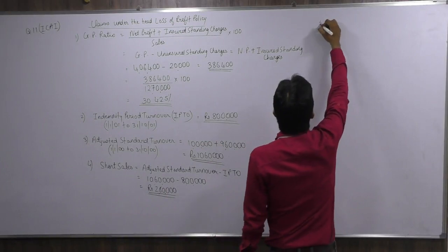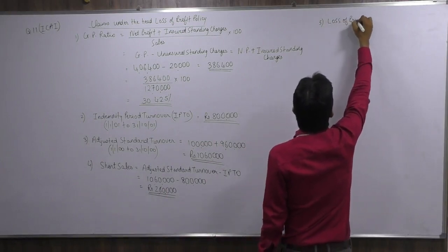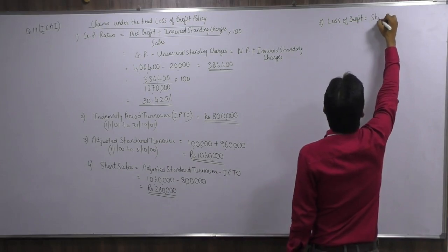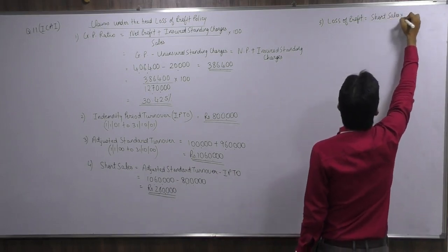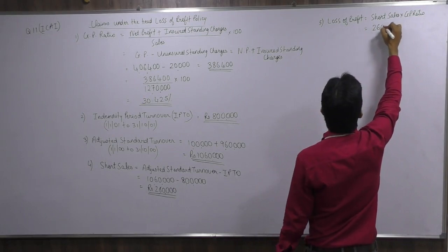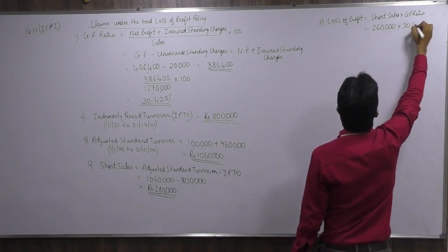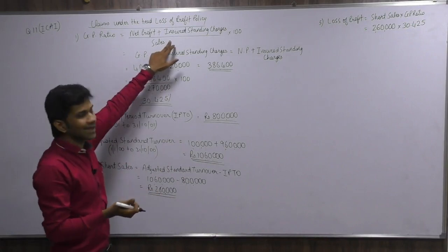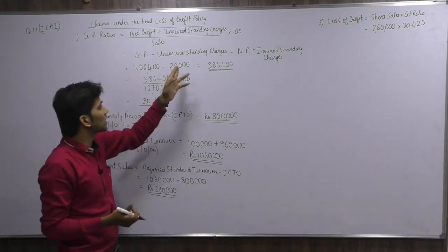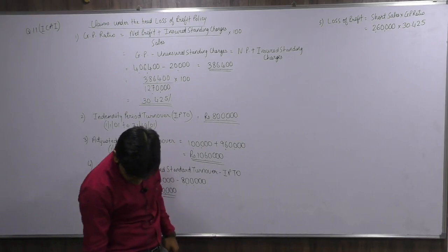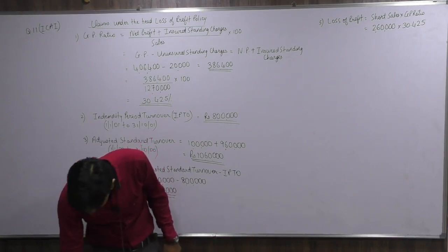Point 5 — Loss of Profit = Short Sales × GP ratio. Short sales = 2,60,000 × 30.425% = 79,105. Important note: students often use the 32% GP ratio given, but that figure includes 20,000 uninsured standing charges. We must use the revised GP ratio of 30.425% to get the correct loss of profit figure.